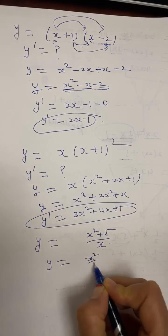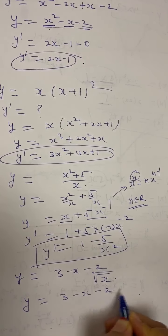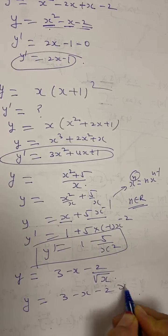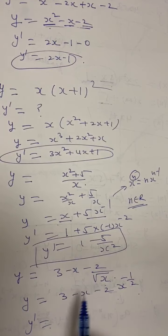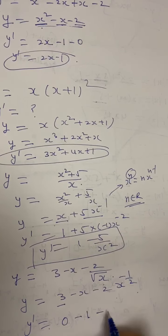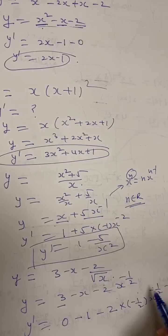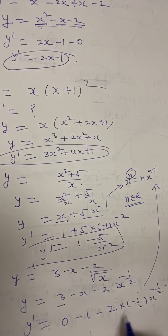The next one: y equals (3 minus x minus 2) over x times square root of x. Rewrite this by separating: after simplification, the terms become 3 over x√x minus 1 over √x minus 2 over x√x, expressed as powers. Taking the derivative: derivative of 3 is 0; then applying the x^n rule to each term gives: minus 1, and then using the exponent rule the next term becomes x to the power of negative three-halves. So y' equals negative 1 plus x to the power of negative three-halves.